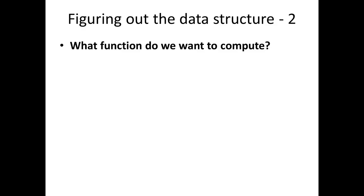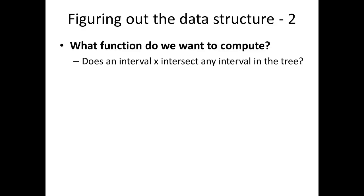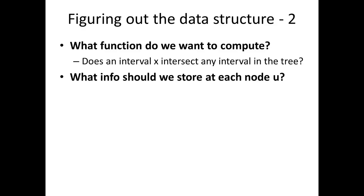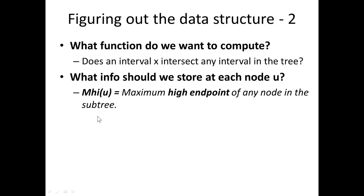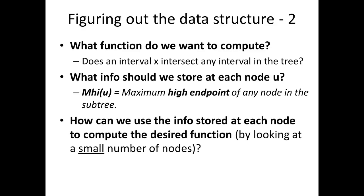So the first big question to ask is: what function do we want to compute using the data that we're going to augment the tree with? The question is: does an interval x intersect any interval in the tree? What info should we store or augment each node with to try to compute this? This is a really difficult part — I'm going to put this in here kind of like an ansatz or educated guess, and show that it works. What we're going to store at each node is mhi(u), which is the maximum high endpoint of any node in the subtree rooted at u.